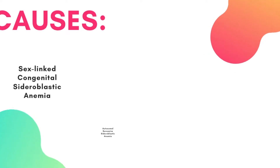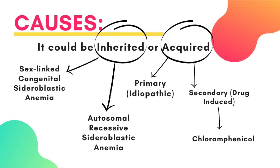Sideroblastic anemia can be inherited or acquired. It could be a sex-linked congenital sideroblastic anemia, or an autosomal recessive sideroblastic anemia, or an acquired sideroblastic anemia, which can be primary — meaning idiopathic, we don't know what the cause is — or secondary, as a result of a drug such as chloramphenicol.